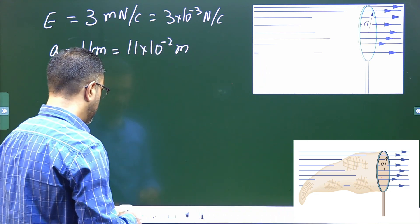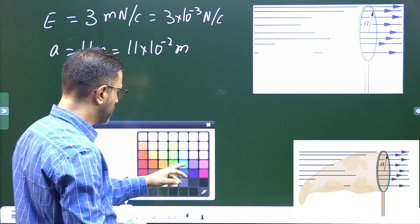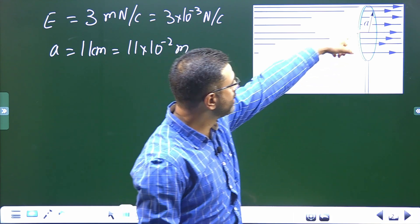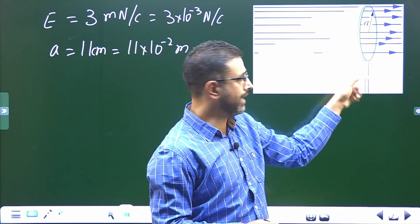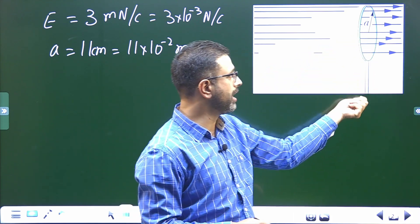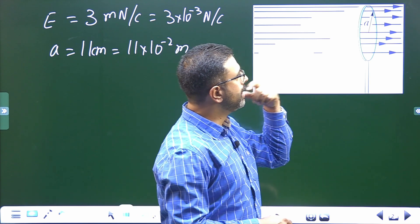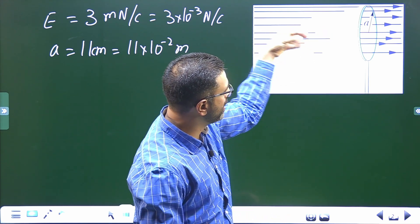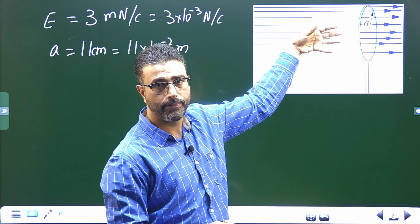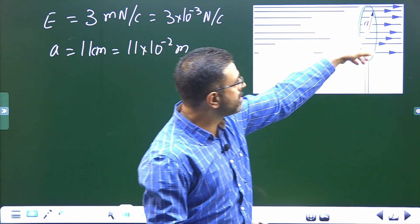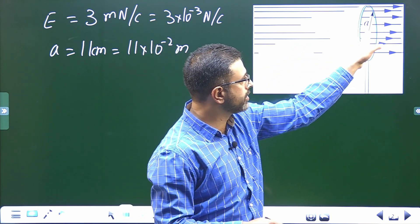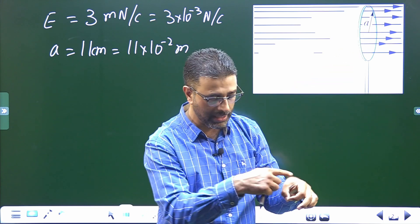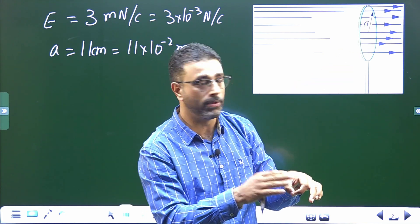So we have a butterfly net here. This is the butterfly net, this is the rim, and this is some kind of a handle. We have to find out the flux through this butterfly net, through this netting here. This is an open surface — it's not closed, it's an open thing.